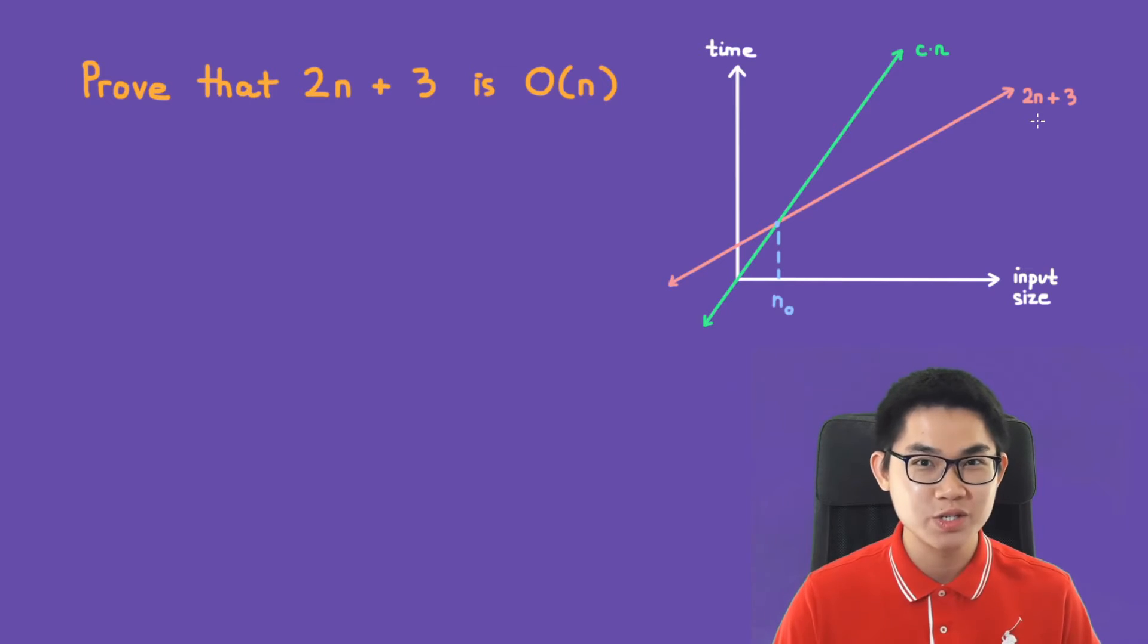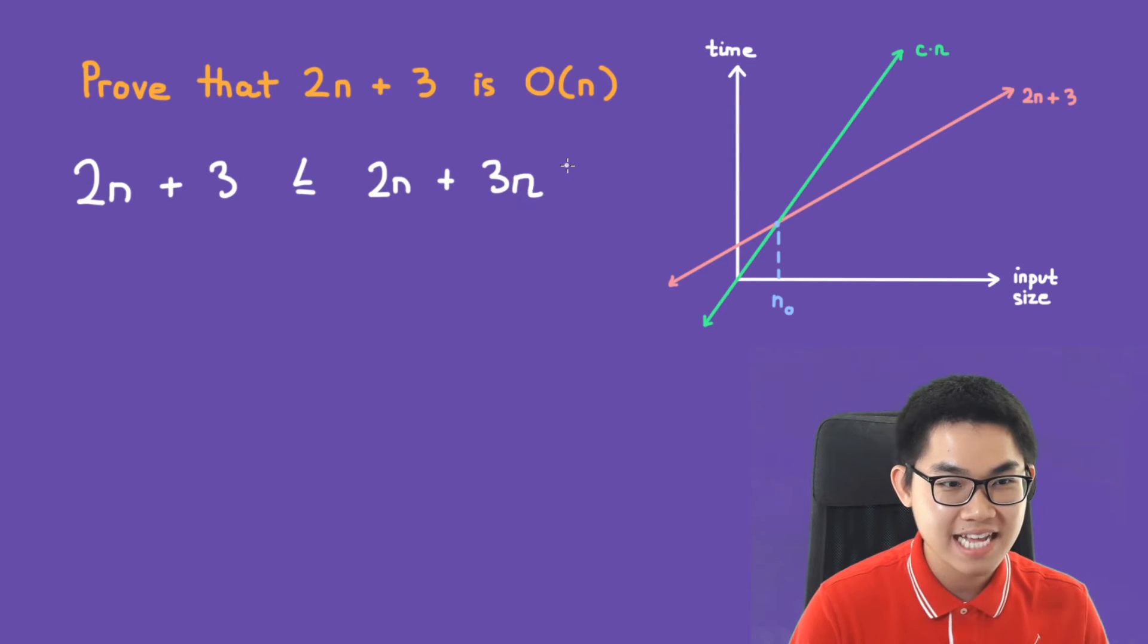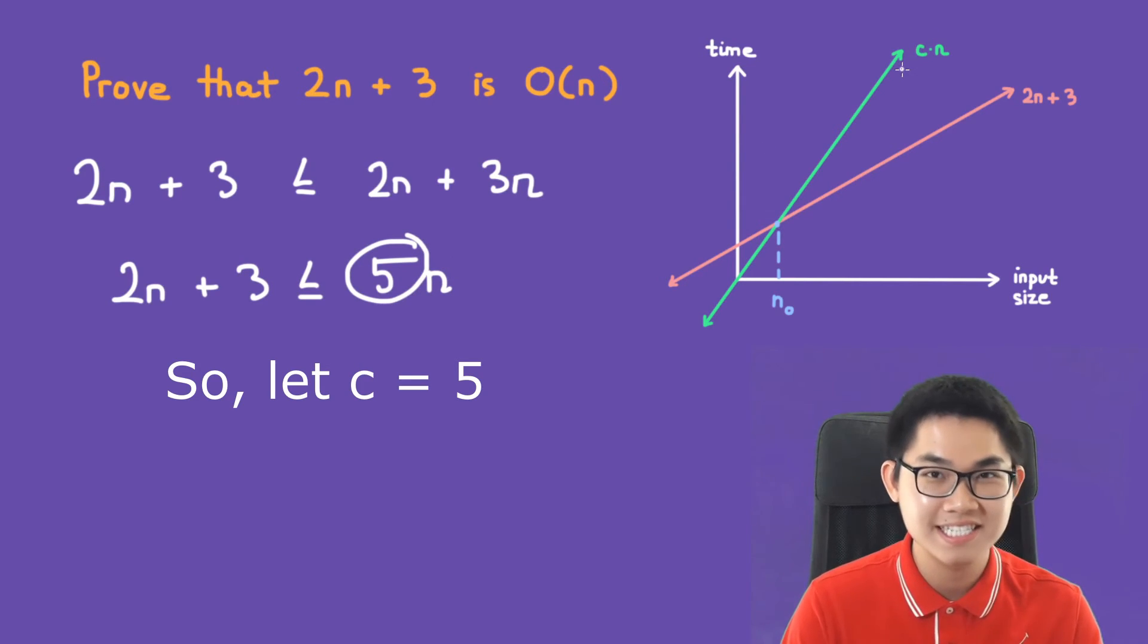We know that 2n plus 3 is less than 2n plus 3n, and that's because the 3 is less than 3n. Now we have 2n plus 3 is less than 5n, so our 5 is basically our constant c.